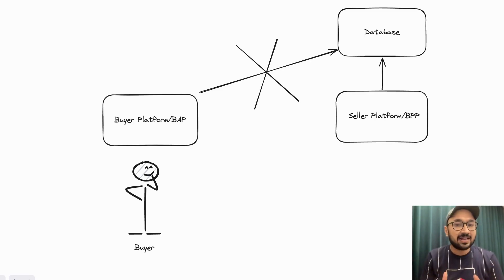To connect the buyer and seller, we bring in the third component, a routing layer called Beckon Gateway. Now, let's see how a transaction flow happens.